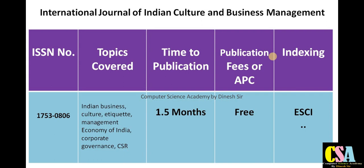Next is the International Journal of Indian Culture and Business Management, ISSN 1753-0806. Topics covered include Indian business culture, etiquette, management, economy of India, corporate governance, and CSR. This journal is especially suited for business, management, finance, and commerce students. It is an SCI-indexed journal, and you will receive manuscript acceptance, rejection, or minor revision notification within 20 days.